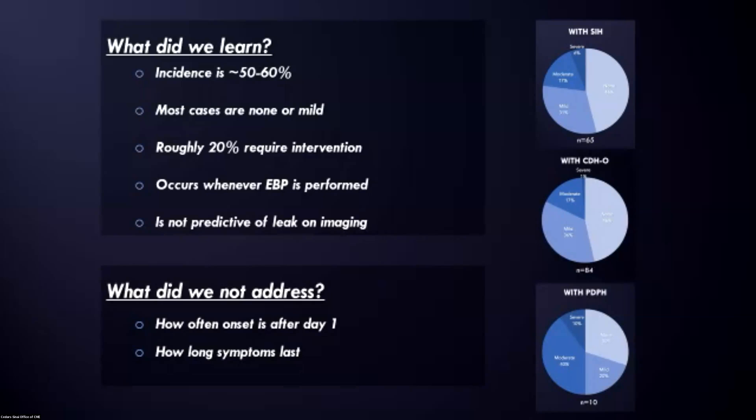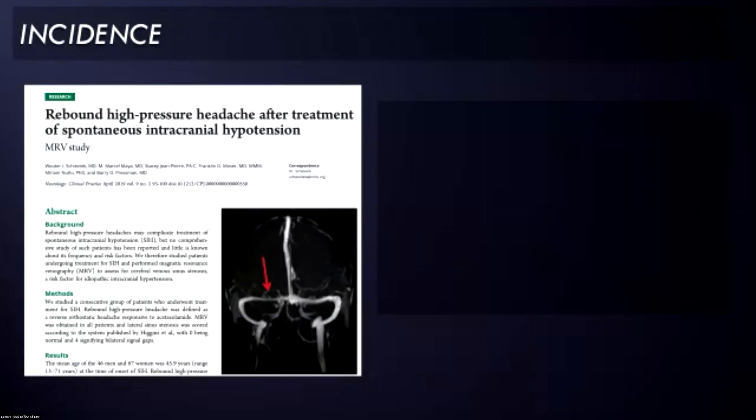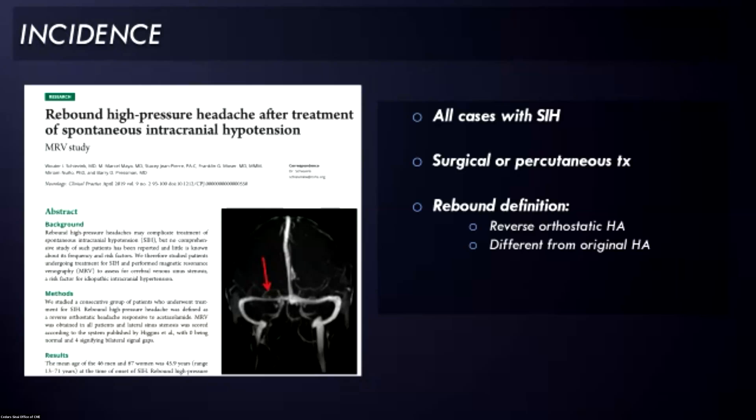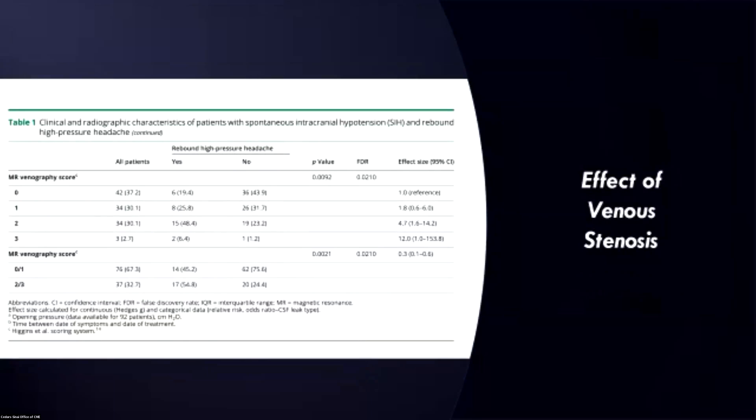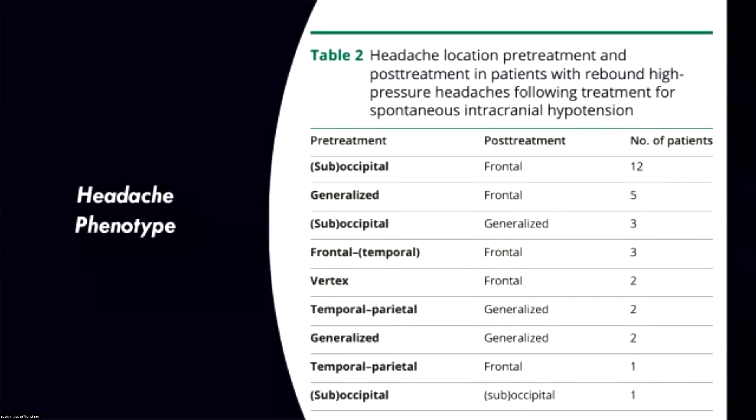Now, in this particular data set, because all these assessments occurred day one, we didn't really assess how often the onset was after day one, and we didn't really assess how long the symptoms last. But Dr. Shevink and his group published this article, and they looked at all cases of SIH, either surgical or percutaneous treatment. In this paper, they defined rebound as a reverse orthostatic headache that was different from the original headache, which makes sense. They also included that it had to resolve with acetazolamide. So all of these patients had to meet the threshold for acetazolamide, which is important because the mild cases that had resolved by the next morning, they wouldn't have necessarily included those patients in their statistics in this paper. So the numbers are seemingly a little different, but in the end, they turn out to be pretty close to the same and not better accounted for by another cause.